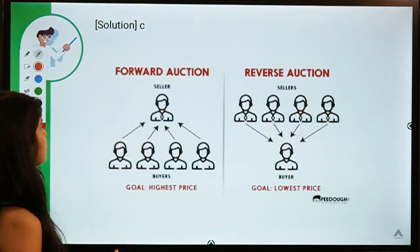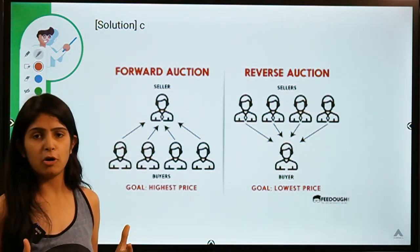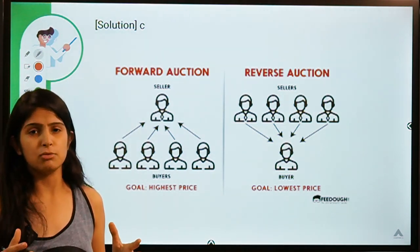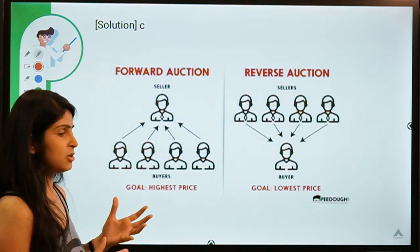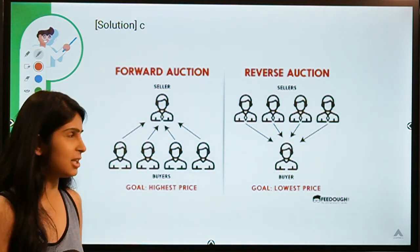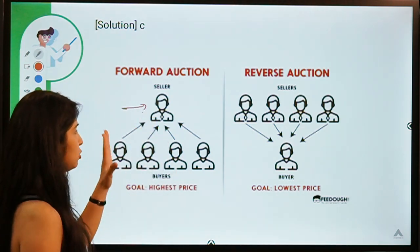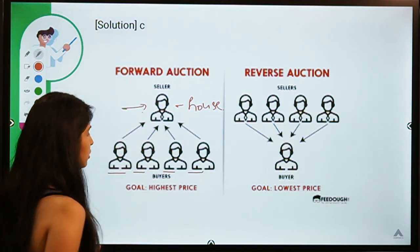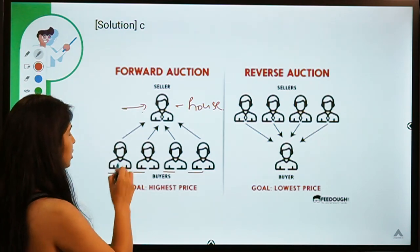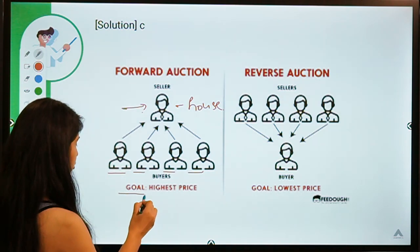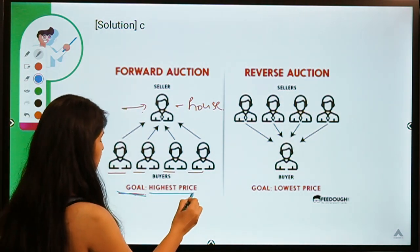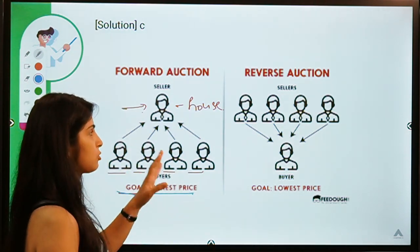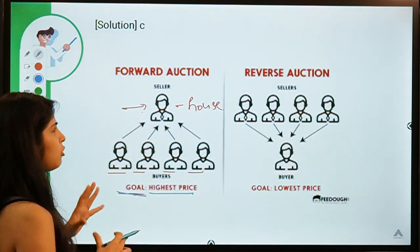Looking at the diagram, in a normal auction there is a seller — like in old Bollywood movies when a house or factory gets auctioned — and there are interested buyers who quote their own prices. The buyer who quotes the highest price wins the auction or wins ownership of that house. This is a forward auction or regular auction, also called a forward auction.